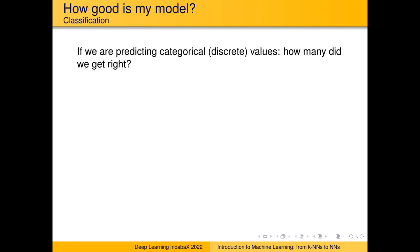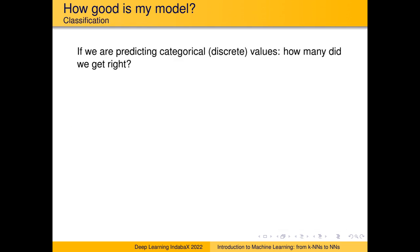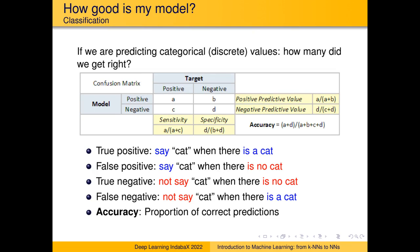But does a distance-based error tell you much for classification problems? One might say: wouldn't I want to know how many examples I got right? Sure, you can calculate a real-valued error, but it might be hard to interpret. Perhaps it's better to look at accuracy. With classification errors, we typically still use mean squared error to train the model, but to evaluate how well the classifier is doing, we want to see how many of my positive and negative examples it got right. That is where the confusion matrix comes in.